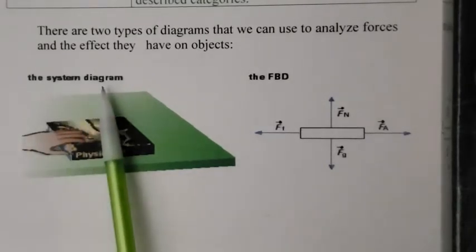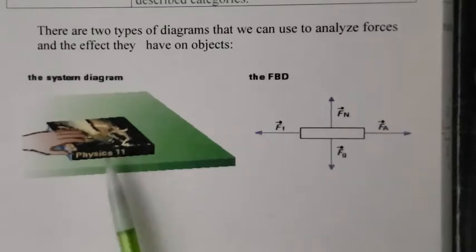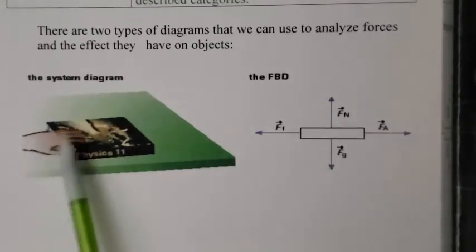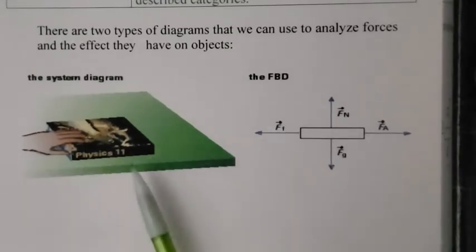The first one's called a system diagram. So if you're an artist, this is for you, where you draw really specifically exactly what the textbook looks like, the hand of all the little fingers and the thumb and such, the desk.